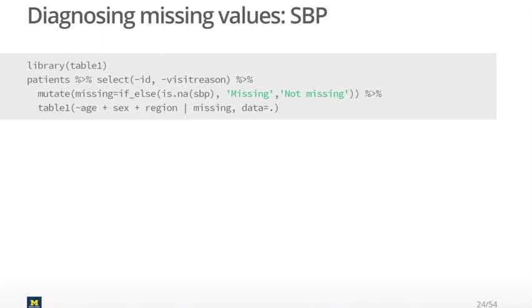Table1 is a package that does not come from Tidyverse, so unfortunately you actually have to add in the second argument 'data equals dot,' which tells it where the data should go — because the default is to ask for a formula first. This formula notation that the Table1 package wants is basically saying: for the different categories of missing, when you stratify for missing, show me the summary statistics for age, sex, and region.